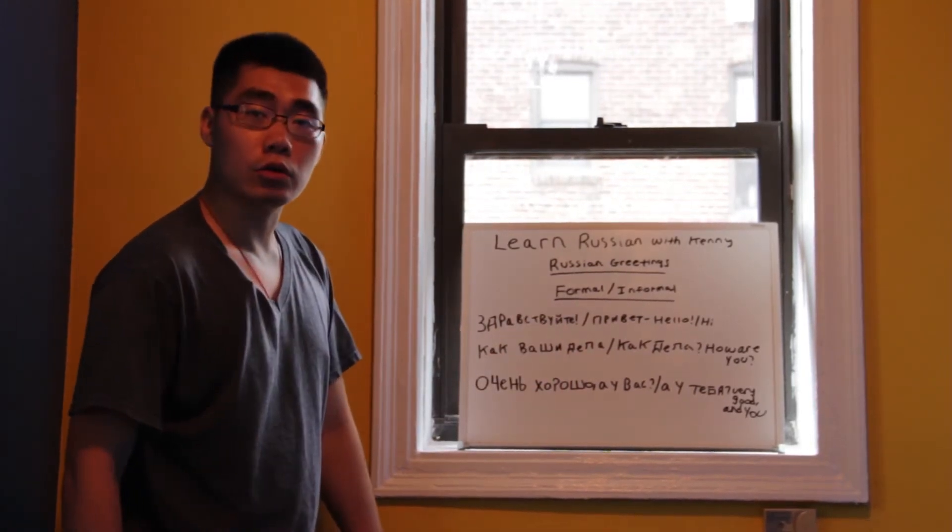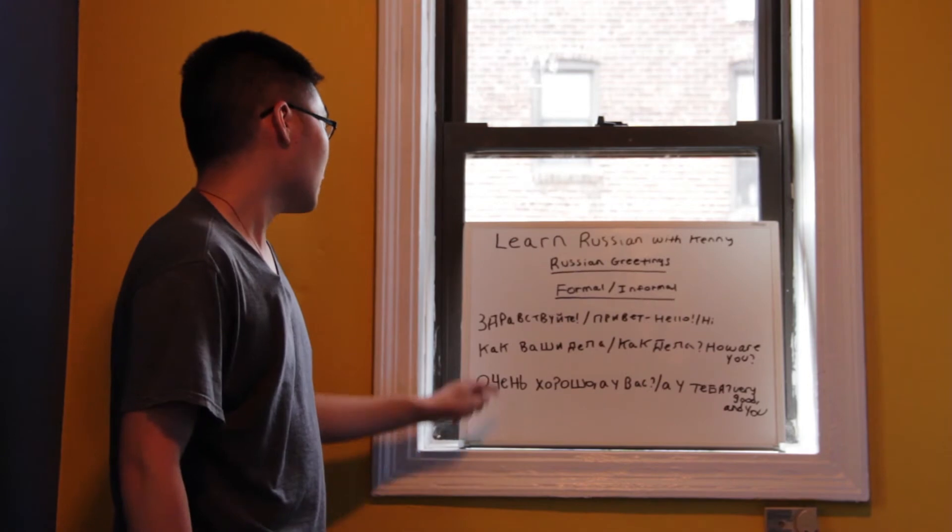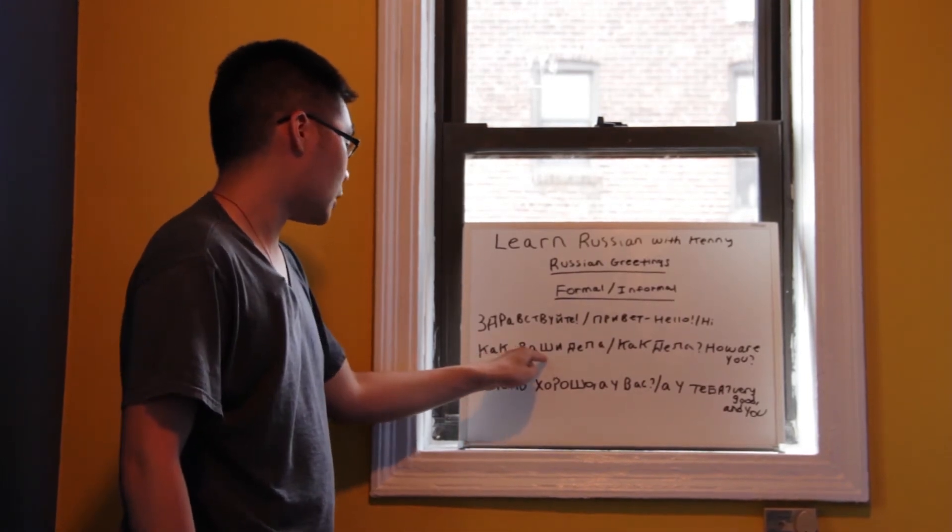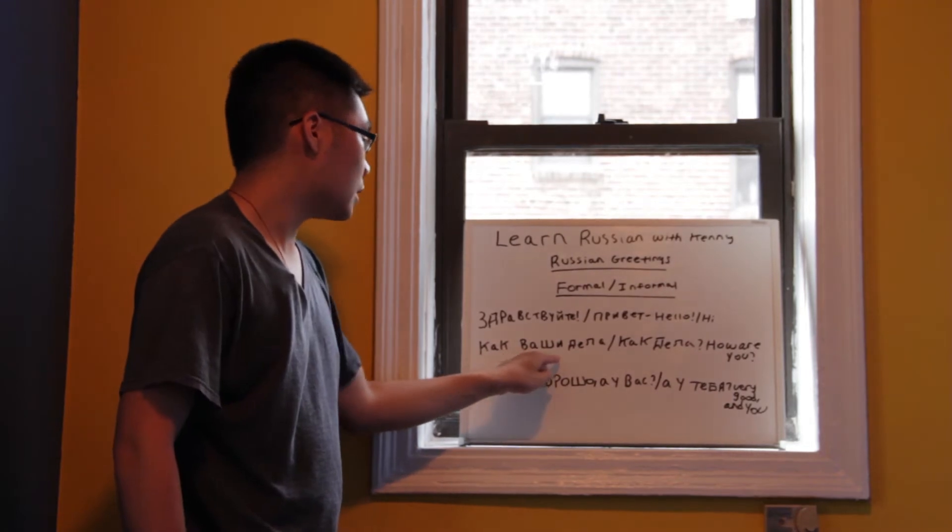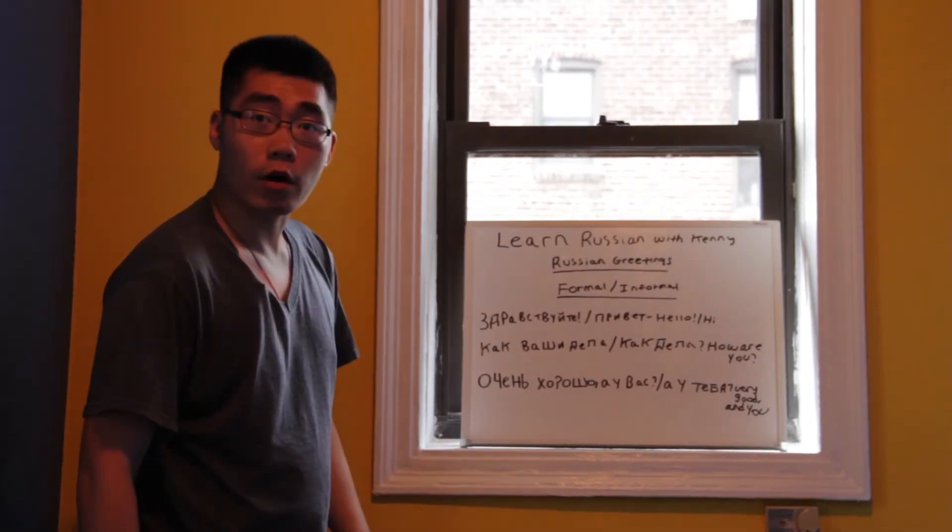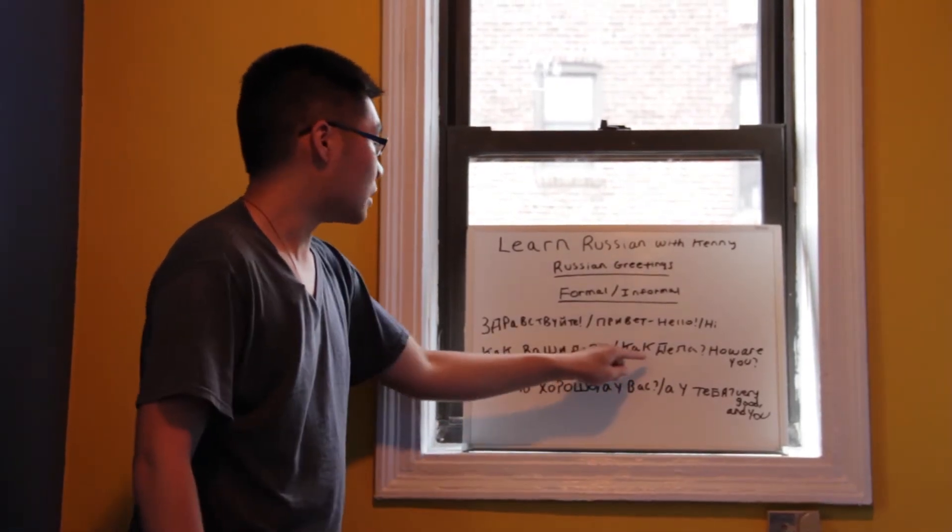The phrase for how are you in the formal way is Как ваши дела? Как ваши дела? In the informal, it's simply Как дела? Как дела?